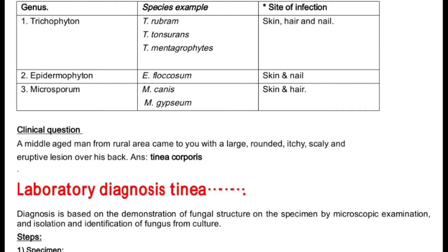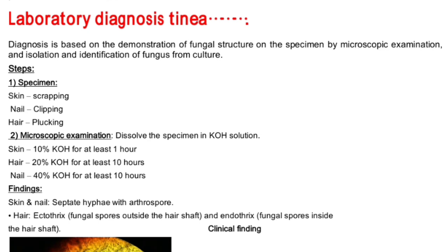Clinical question: A middle-aged man from a rural area comes to you with a large, rounded, itchy, scaly, and eruptive lesion over his back. The rural area suggests he may be a farmer with direct contact with soil. The lesion over the back is tinea corporis. If it were on his leg, it could be tinea pedis. Diagnosis is taken from the specific site of infection.